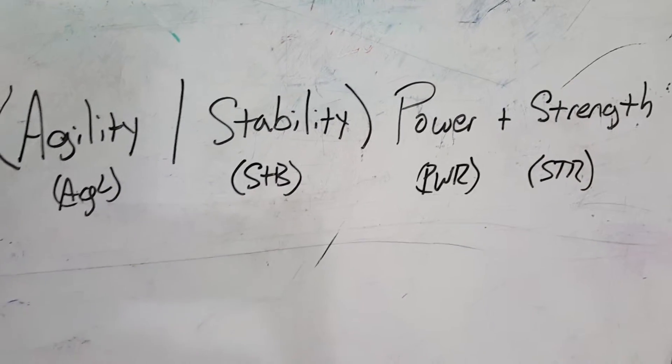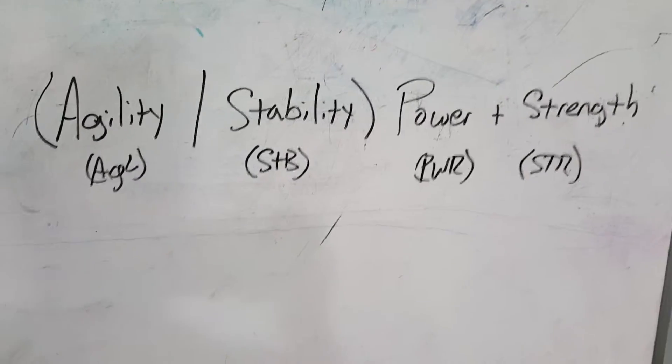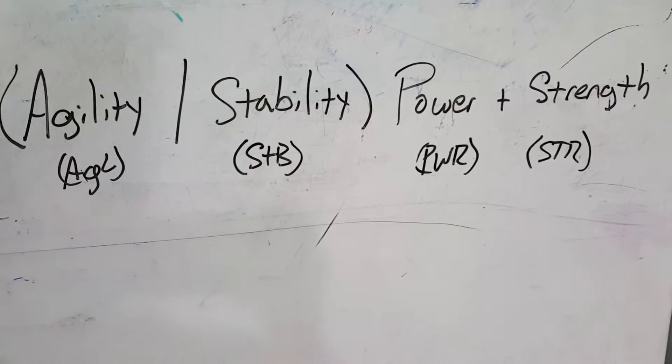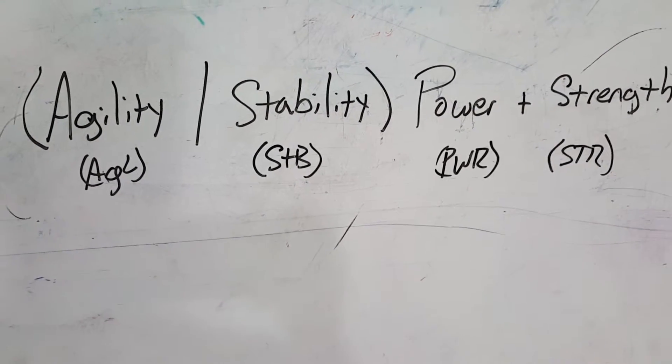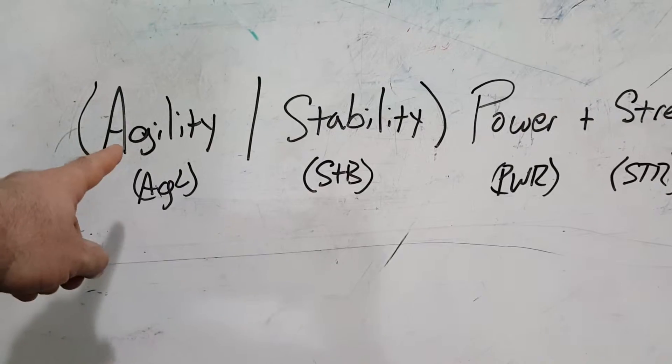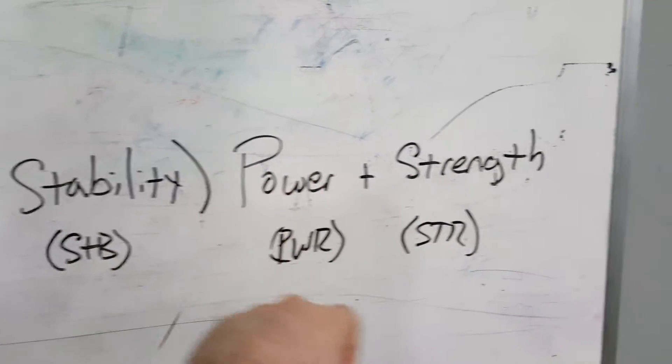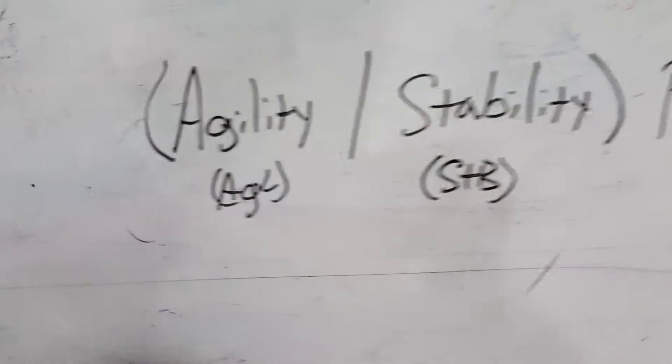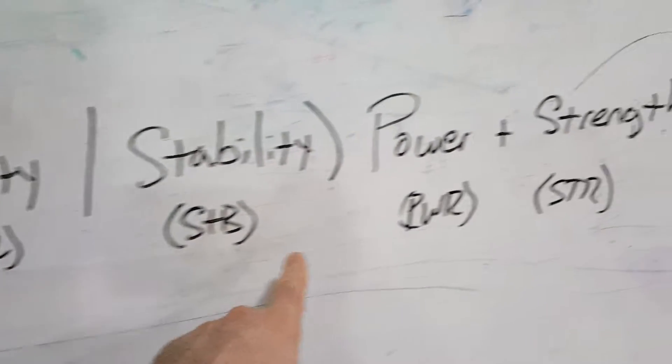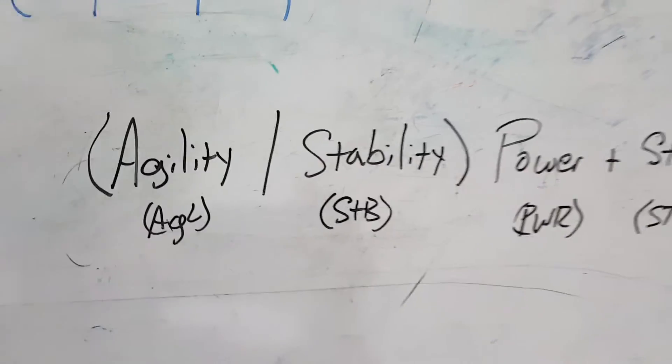Alright everyone, this is Aaron and this is My Promethean Way. Here's your tip of the day. I've got a formula here: Agility, Stability, Power, and Strength. Here are the abbreviations: AGL, STB, PWR, and STR.